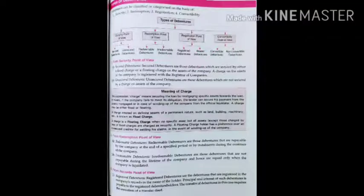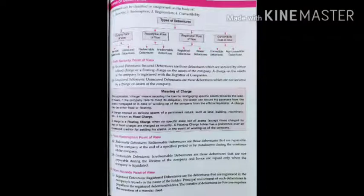Unsecured debentures are those not secured by a charge on the assets of the company. Charge means securing the loan by mortgaging specific assets towards the loan — if a company fails to meet its obligation, the lender can secure payment from the mortgaged assets. In case of winding up, the official liquidator handles this. A charge may be either fixed or floating.